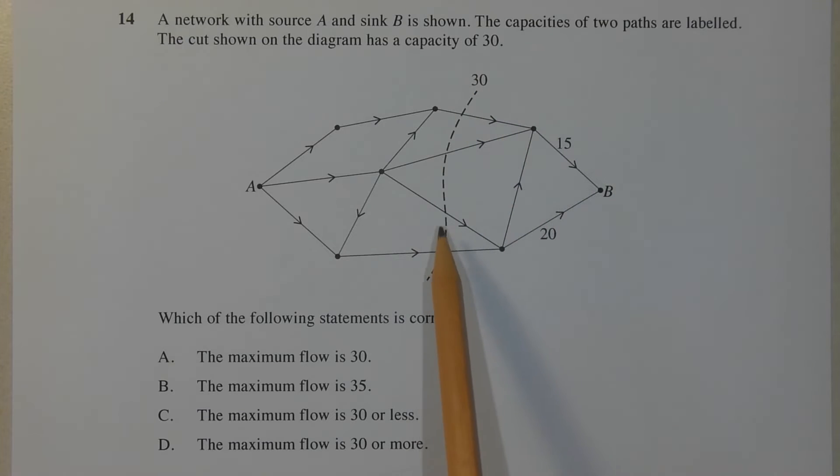Going back to the cut, we're not told whether it's the minimum cut or not. Now, if this was the minimum cut, this would represent the maximum flow. Therefore the maximum flow in that case would be 30.